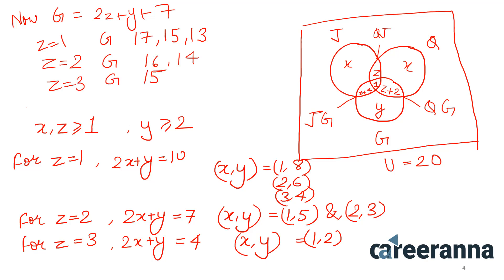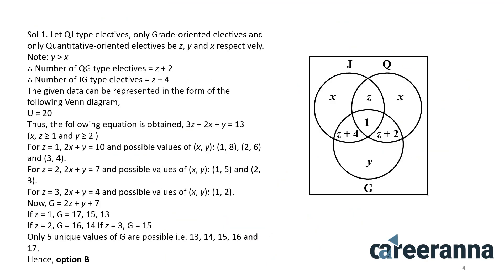The question asks how many unique values of G are possible. The value 15 appears in both Z=1 and Z=3 cases, so the unique values are 13, 14, 15, 16, and 17 — that is 5 unique values. Hence the answer is 5. Keep this Venn diagram in mind as we'll use it for the coming questions.